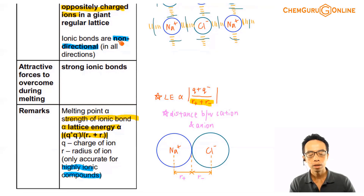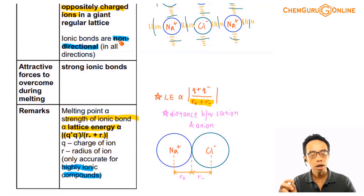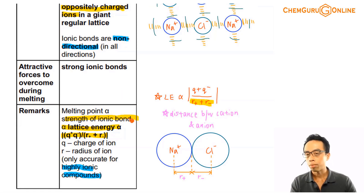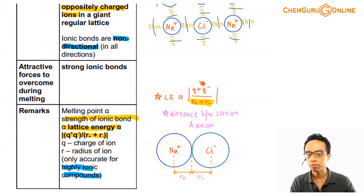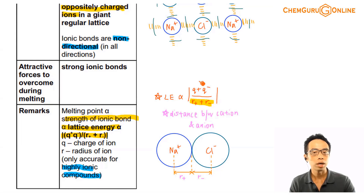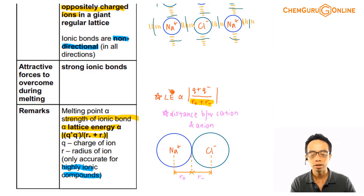We need to compare the melting point between ionic compounds — ionic compound vs ionic compound. The concept we use to compare this is lattice energy, because the melting point is related to the strength of the ionic bond. A stronger ionic bond needs more energy to overcome, so the melting point will be higher. The strength of an ionic bond is related to lattice energy.